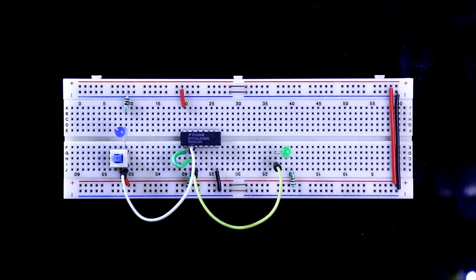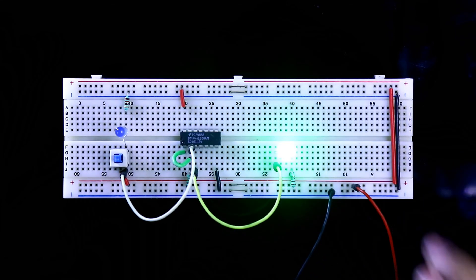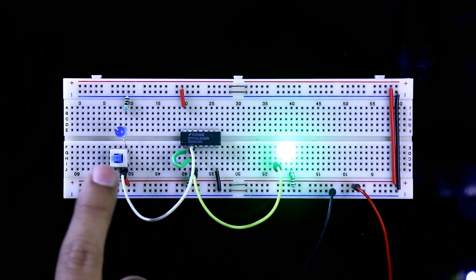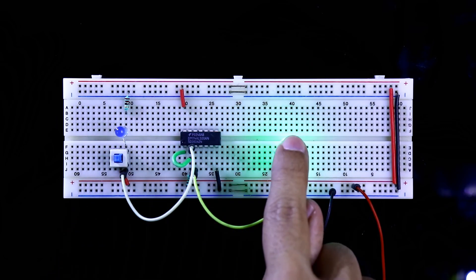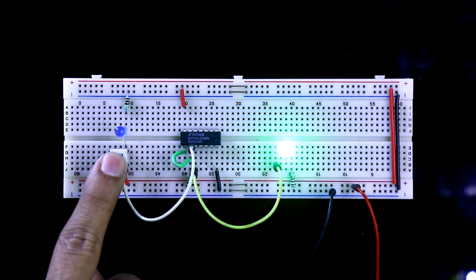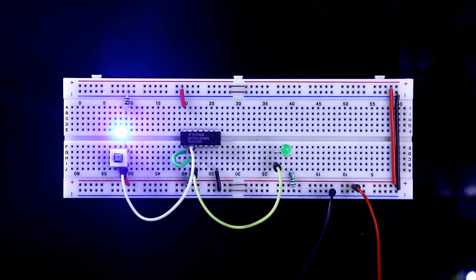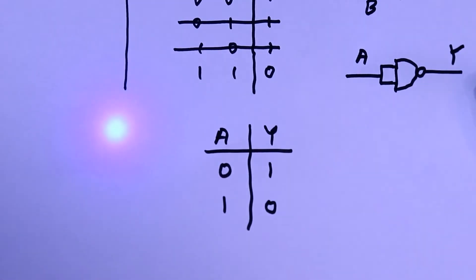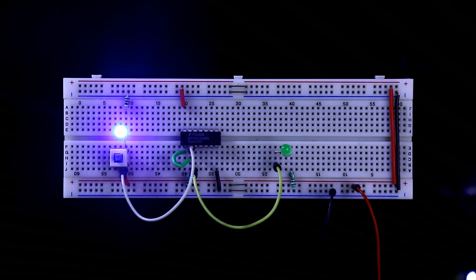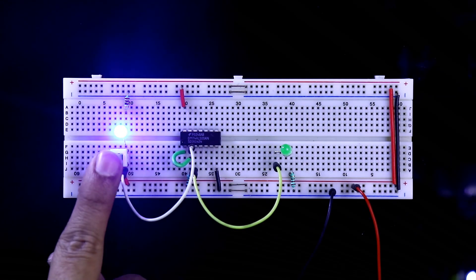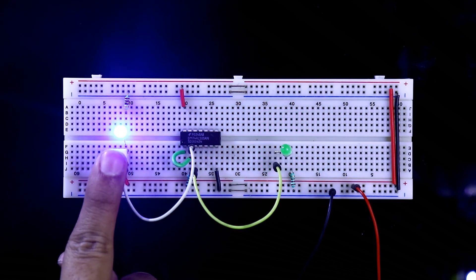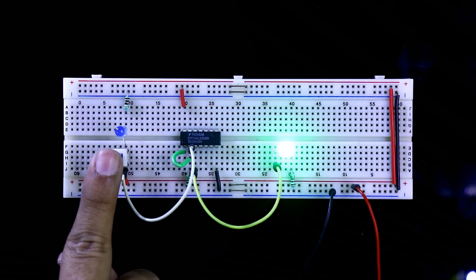Now I am connecting the 5 volt power supply — here is the positive and the negative. When a equals 0, y equals 1, and when a equals 1, y equals 0. So this is our truth table. This is how we can make a NOT gate using a NAND gate.